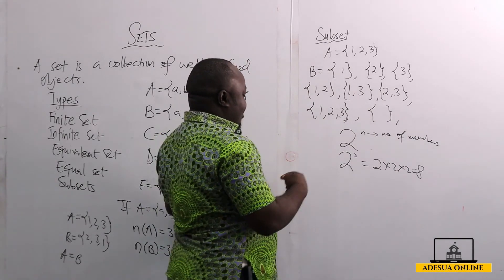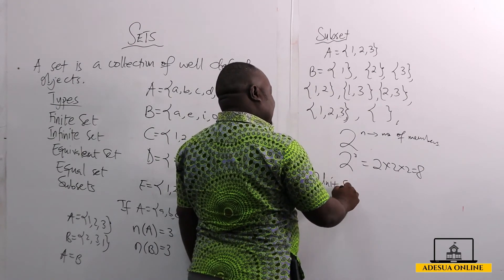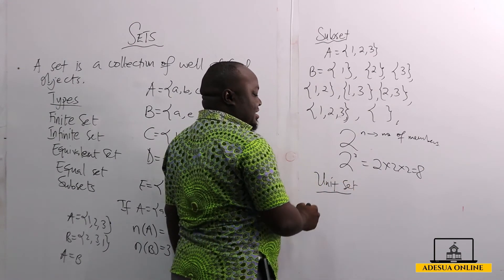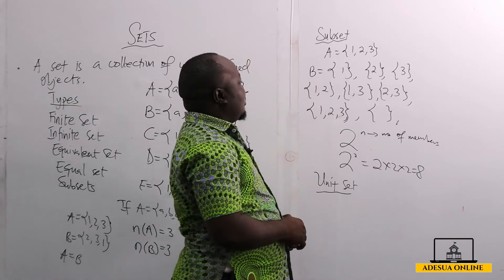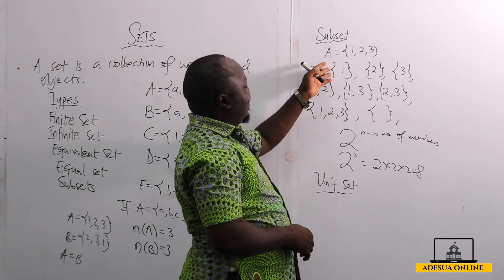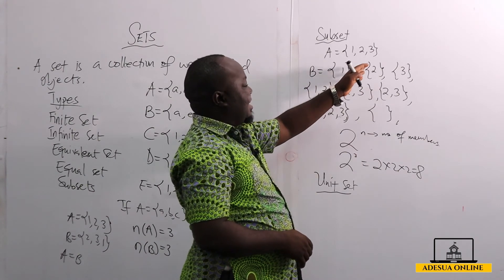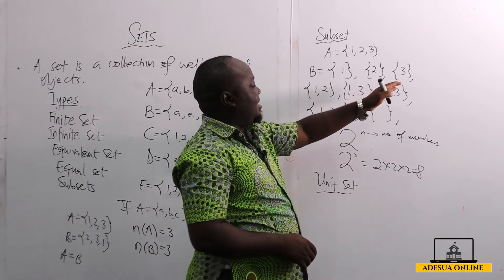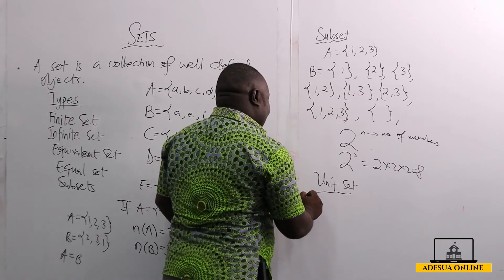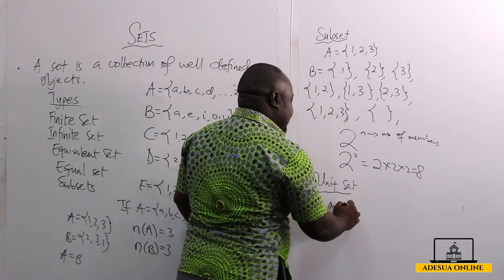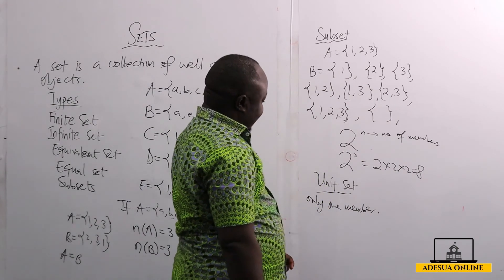We also have what we call a unit set. A unit set is a set with only one member. So for example, the element 1 is a unit set, the element 2 is a unit set, and the element 3 is a unit set, because each has only one member. That's what we call a unit set.